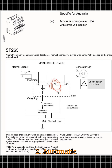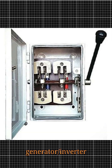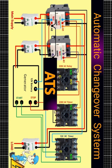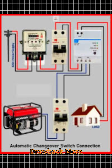2. Automatic changeover switch — ATS, automatic transfer switch. Automatically switches from mains to generator or inverter when power fails. Widely used in hospitals, industries, data centers, and offices. Advantage: instant switching, no interruption. Drawback: more expensive and complex.